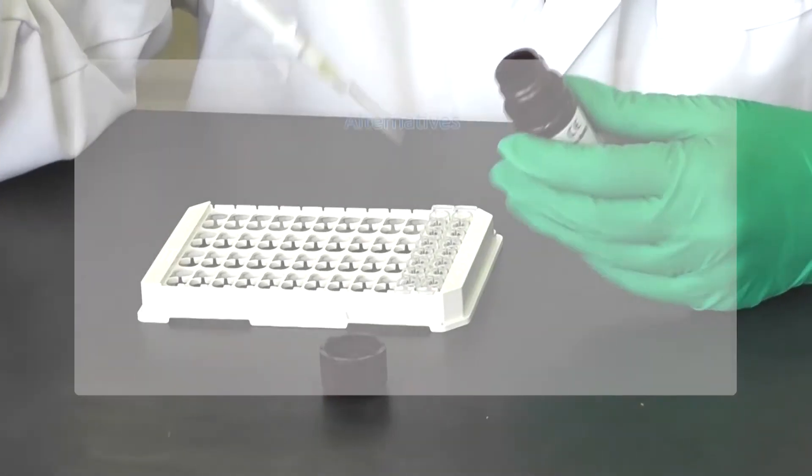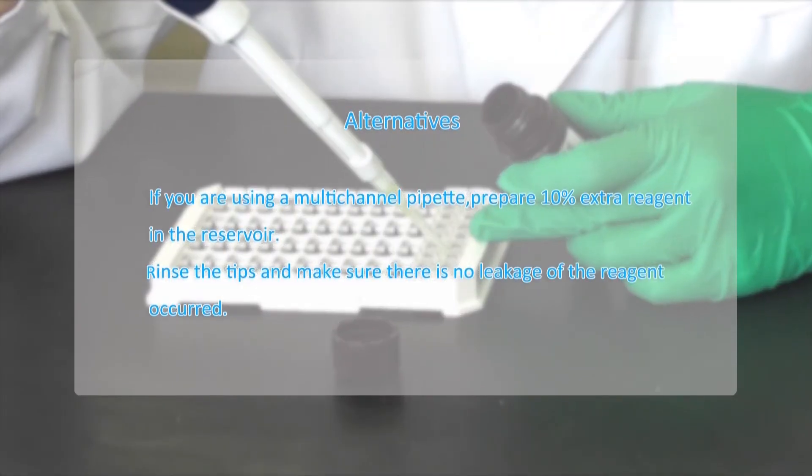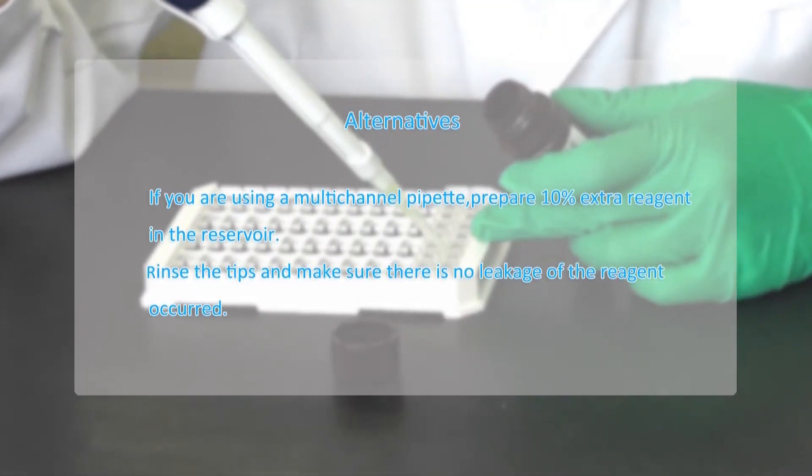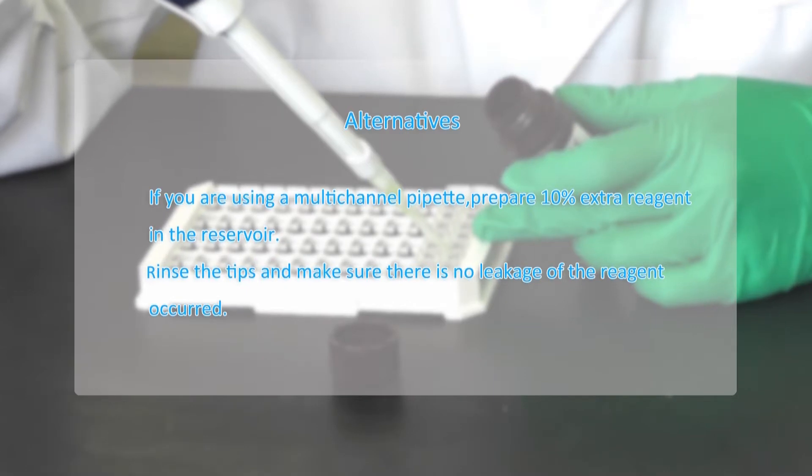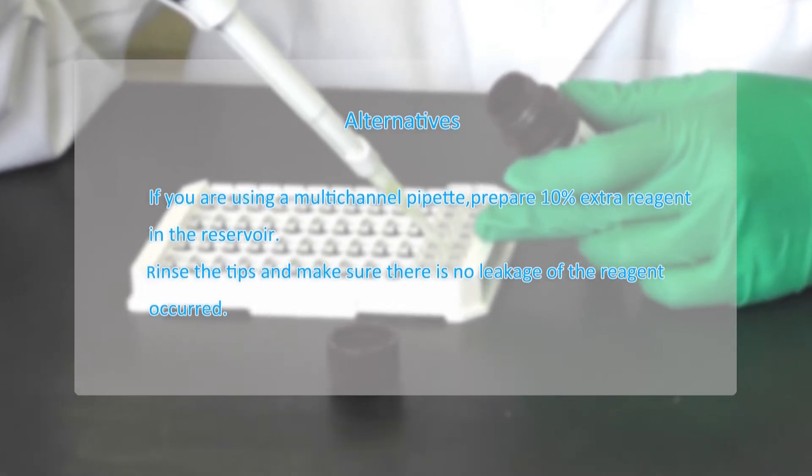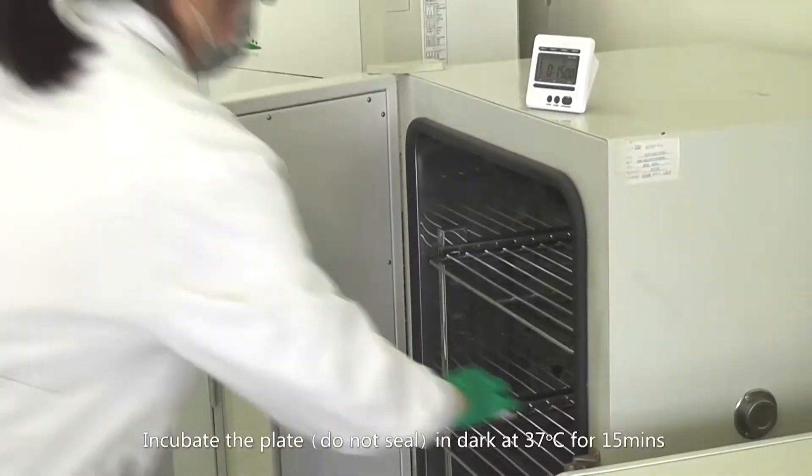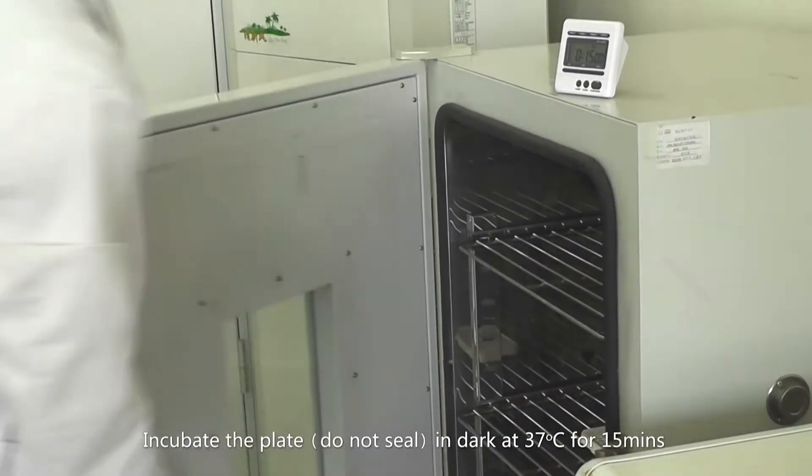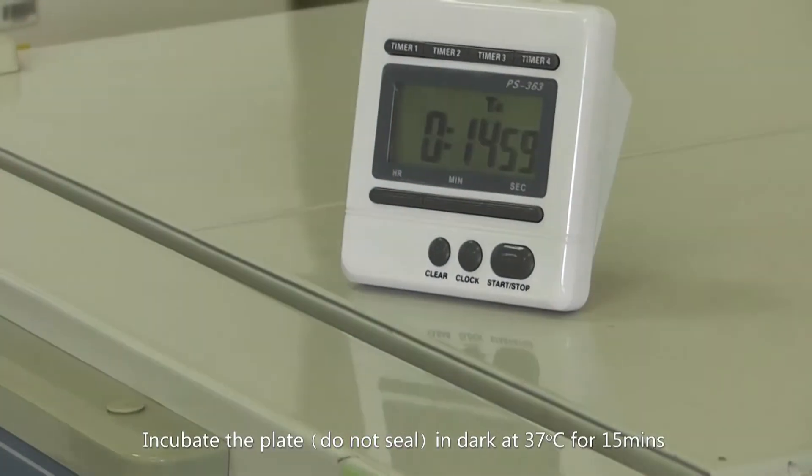Again, if you are using a multichannel pipette, prepare 10% extra reagent in the reservoir. Rinse the tips and make sure there is no leakage of the reagent occurred. Incubate the plate in dark at 37 Celsius for 50 minutes.